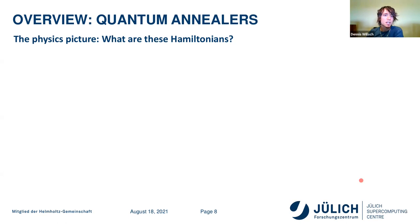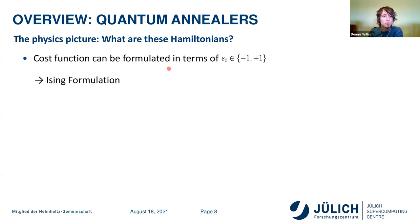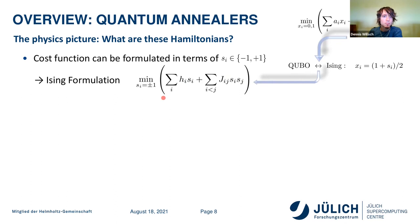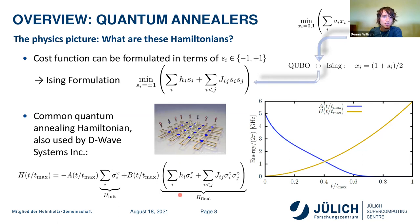Now the final physics slide: what are these Hamiltonians? We need to reformulate our problem. There's not only the QUBO formulation but also the Ising formulation where problem variables are minus or plus one. To convert, we replace each binary variable by spin variables and collect all linear and quadratic terms — the optimization problem itself is equivalent. This function is exactly the final Hamiltonian the system evolves into. When we start in the lowest energy state and evolve through the quantum annealing schedule into the lowest energy state of the final Hamiltonian, that is the solution to our problem.